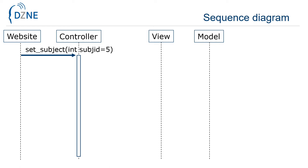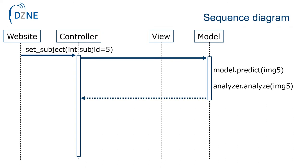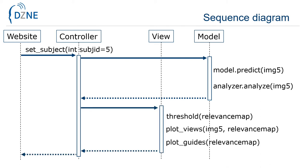The general sequence of function calls is outlined here. When the user selects a new subject, the controller first requests the CNN model to process the corresponding gray matter map to obtain the diagnostic probability for Alzheimer's disease. Then we use the analyzer of the iNNvestigate toolbox to obtain the relevance map. In the second step, the relevance map is thresholded, displayed, and the visual guides are updated. We tried to implement the visual framework as reusably as possible to enable easy modification of the input data and CNN models.